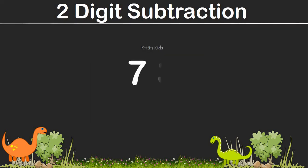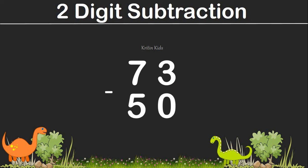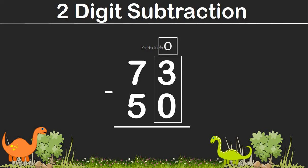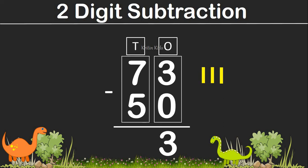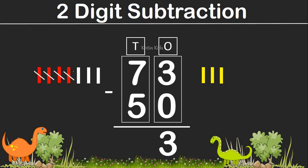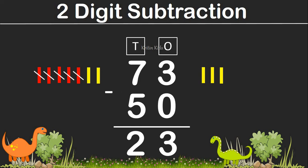Let's take another example: 73 minus 50. On the one's position, we have 3 and 0. Let's draw 3 lines. We need not cut any line because the second number is 0. So we have 3. 3 minus 0 is 3. On the tenth position, we have 7 and 5. So let's draw 7 lines. Now out of this, we need to cut 5 lines. So remaining are 2 lines. So 73 minus 50 gives us 23.